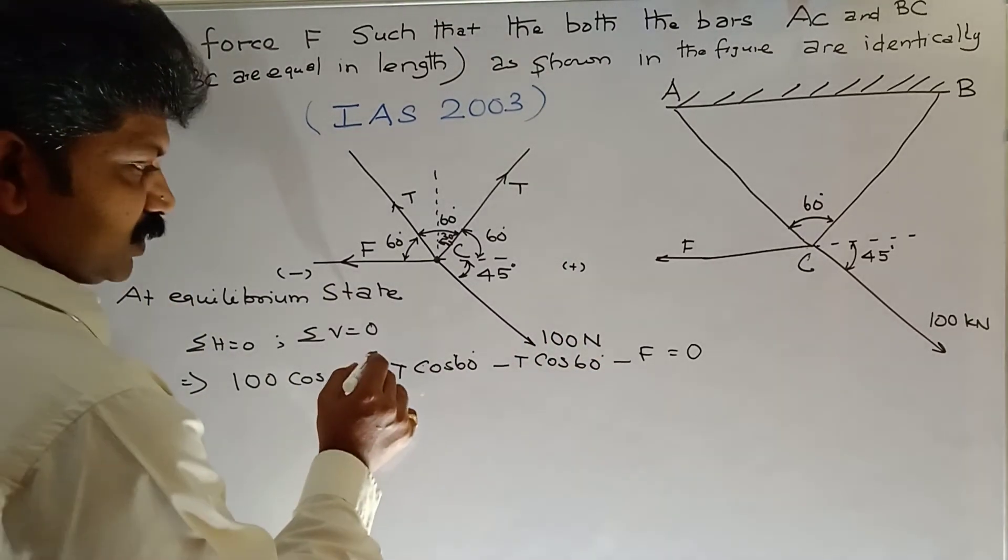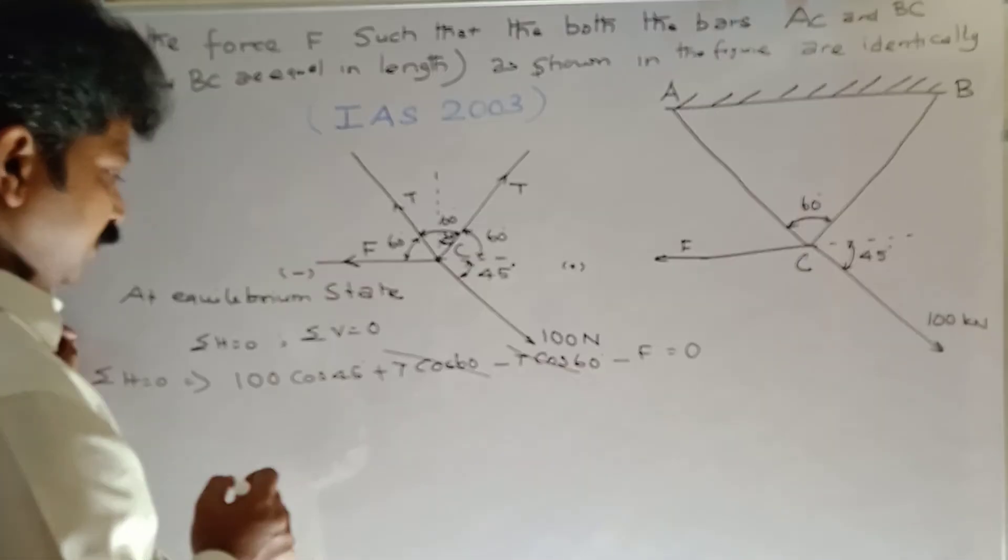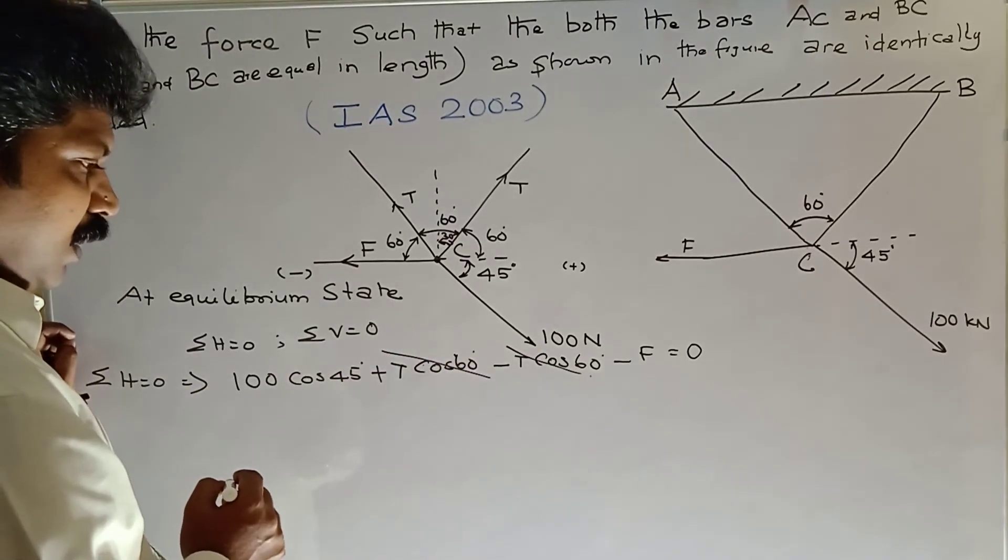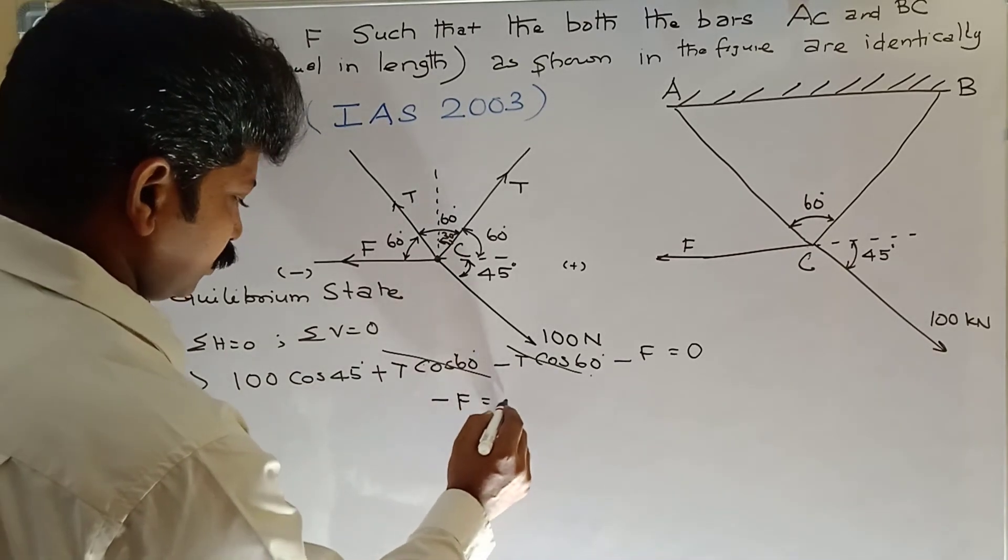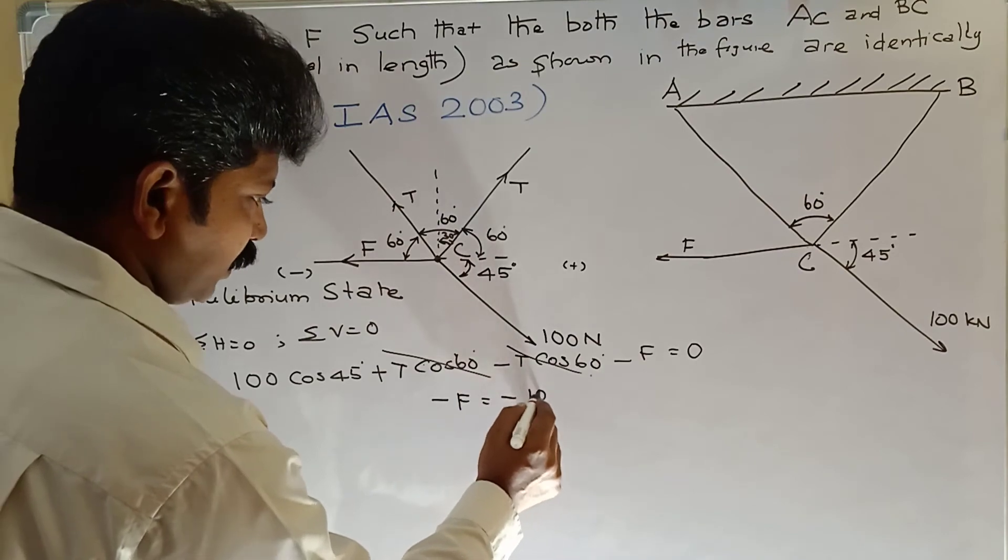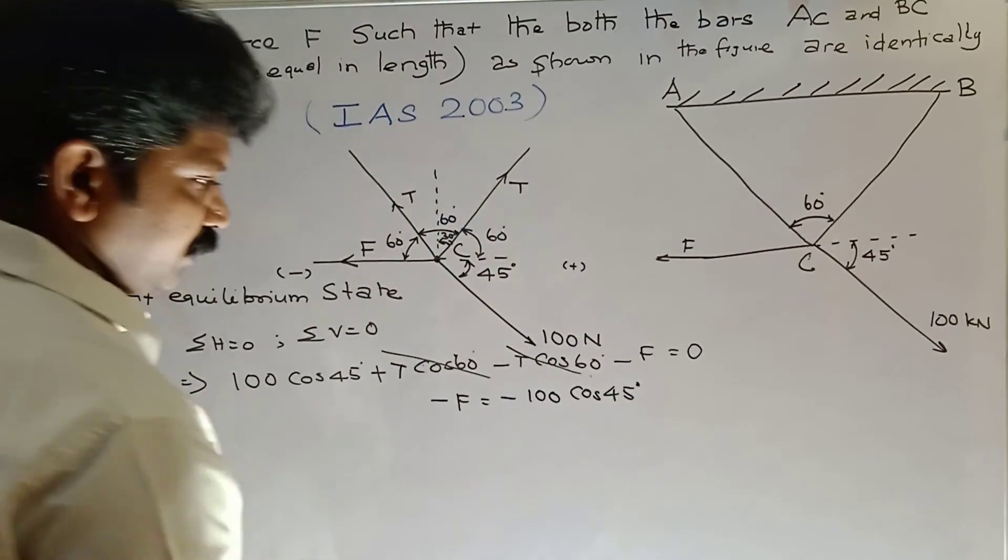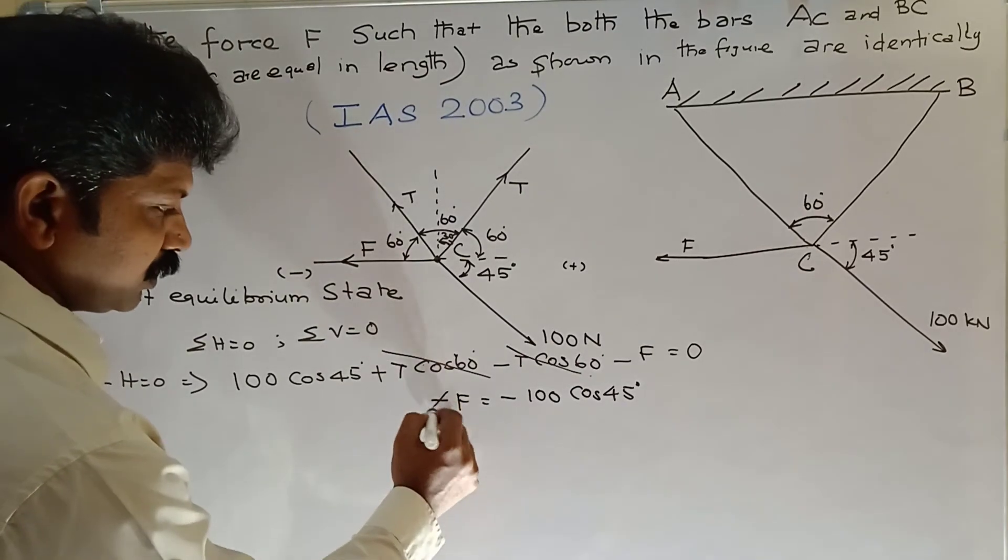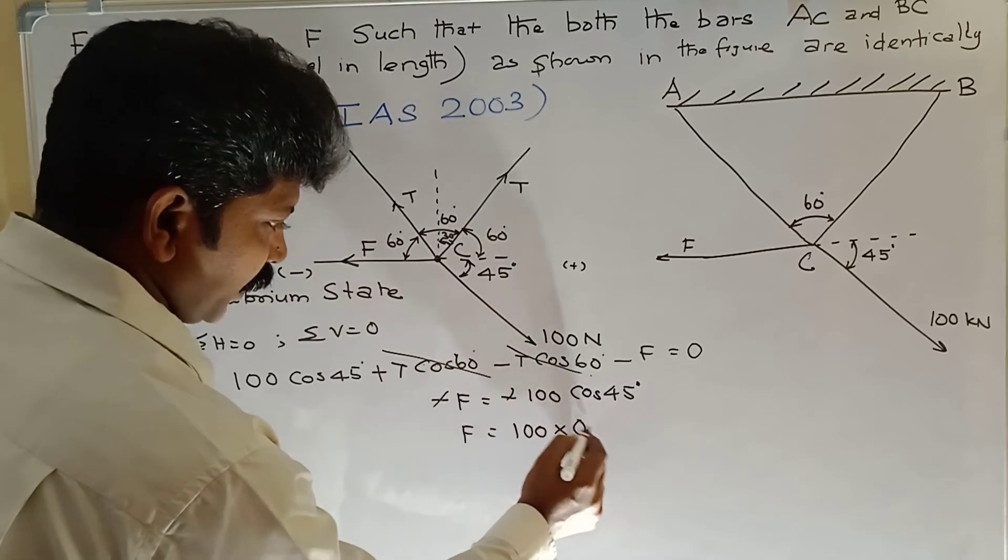Now T cos 60 plus and minus cancel. So minus F equal to minus 100 cos 45. Minus minus cancel, F equal to 100 times cos 45, which is 0.707.